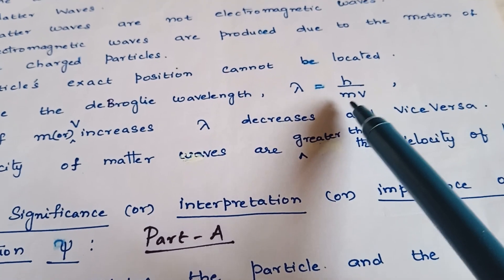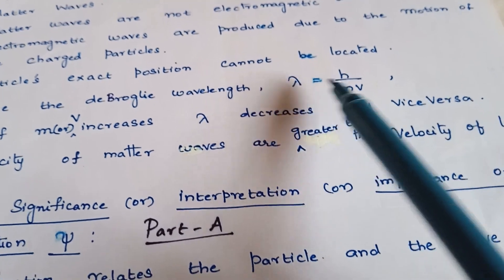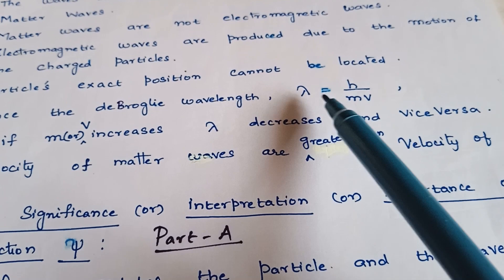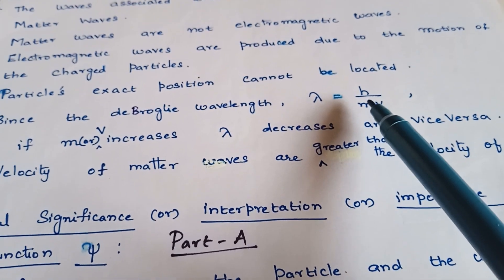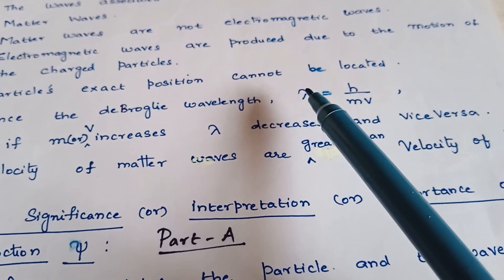Since in this formula mv is in the denominator, they are inversely proportional to each other. Therefore, when mass of the particle is increasing, lambda will be decreasing.